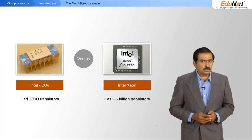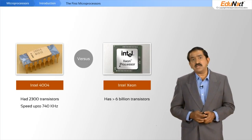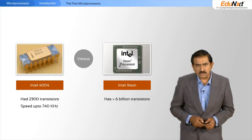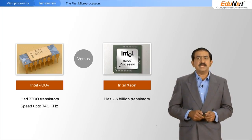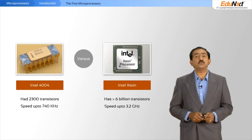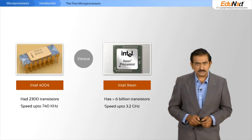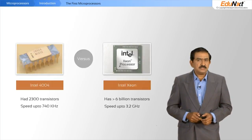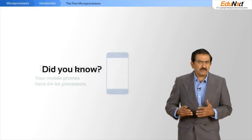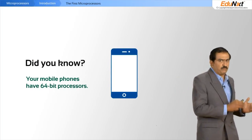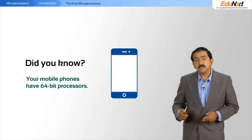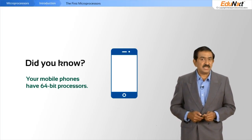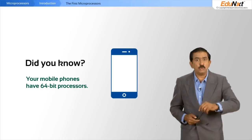The 4004 ran at 740 kilohertz, whereas today's processors run at an excess of 3.2 gigahertz. And if you think of where we have gone from 4 bits, today the state of the art is 64 bits — even on your mobile phone.